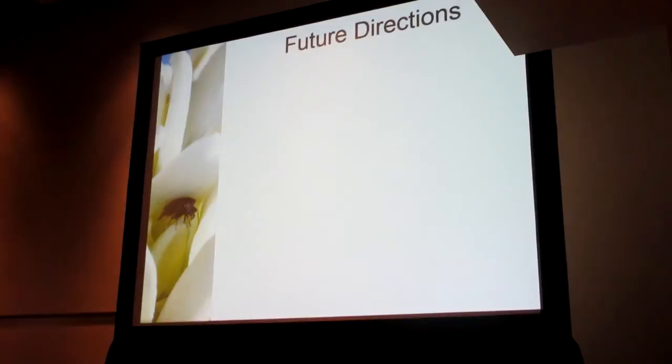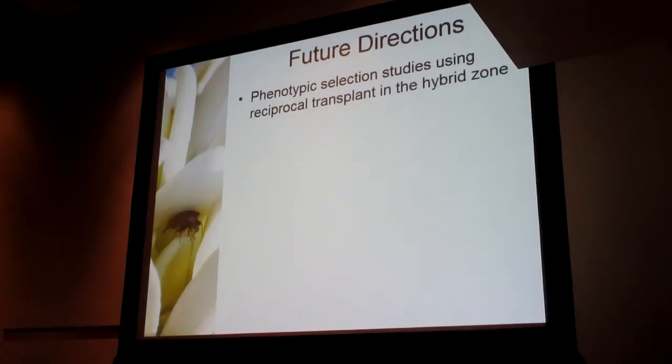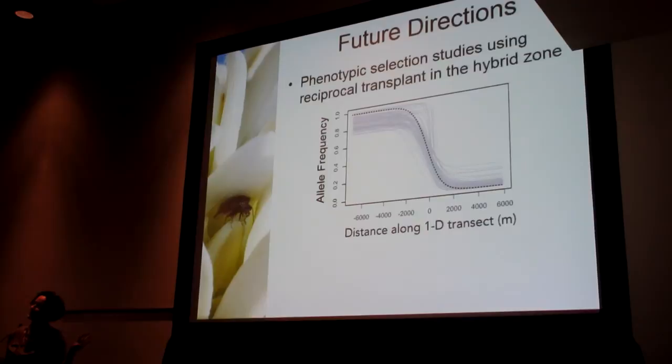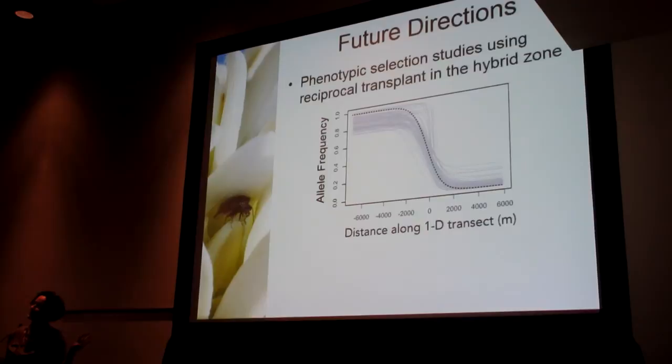One way we're working on getting at whether that's theoretically possible is using phenotypic selection experiments in the hybrid zone — that work has been ongoing with at least one more year to go — along with reciprocal transplant studies. Finally, we want to understand what's driving these really steep SNP clines. Our current hypothesis is that there may be strong post-zygotic selection at early life stages, so we're looking at seed production and seed performance in the hybrids. I'd like to thank our collaborators and funding sources, and I'd love to hear your questions.